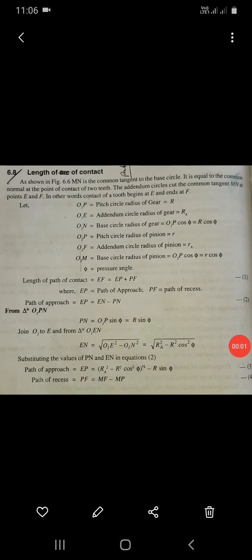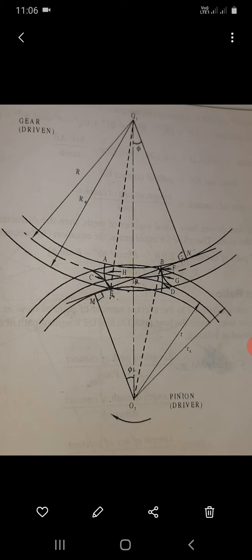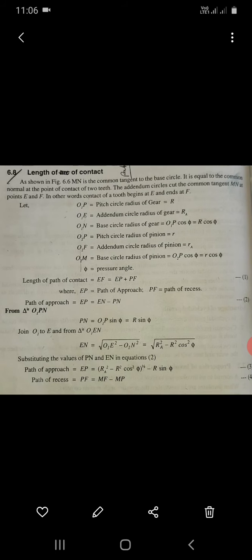Next, derivation of length of path of contact. As we see the figure, the figure shows a gear and pinion engagement with MN as the common tangent to the base circles, equal to the common normal at the point of contact of two teeth. The circle cuts the common tangent MN at points E and F.